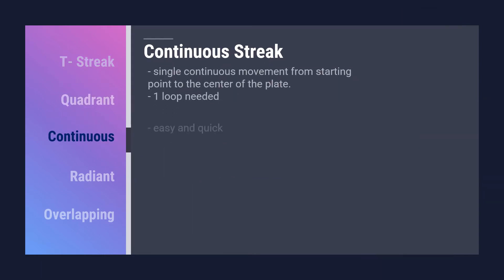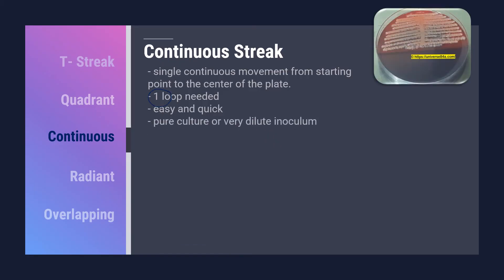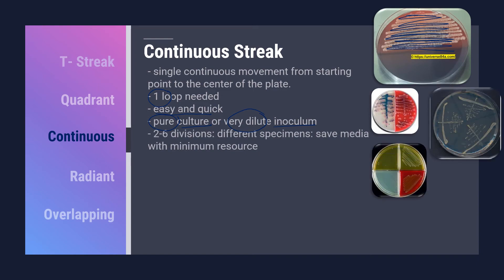Next is the continuous streak, where only one loop is needed to perform the inoculation, which makes it very easy and quick to perform. Only a single continuous movement from the starting point at the top of the plate all the way down to the center is used. We use this streaking pattern when the culture is already pure or when the inoculum is very dilute or has a minimum number of organisms. Another advantage is that the plate can be divided into two to six divisions, each with a different specimen, to save media when resources are limited.